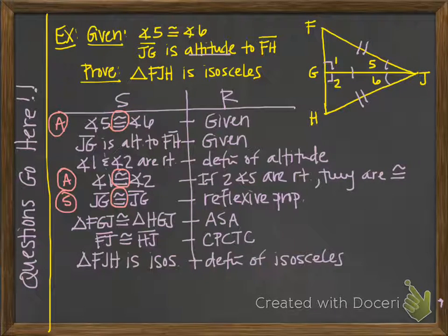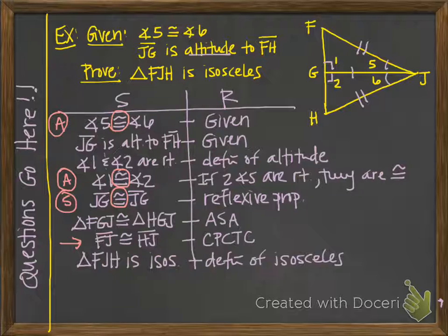We could have just as easily used the second-to-last step differently. Instead of stating sides FJ and HJ congruent, we could have said that angle F is congruent to angle H by CPCTC, and the last statement concluding isosceles would still be the same.